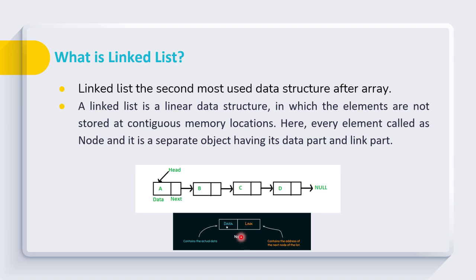Every node has two parts: one is data and one is link. These links in the nodes help us to connect all the nodes together and facilitate traversal of nodes from start to end.